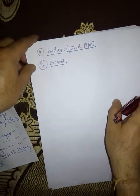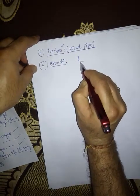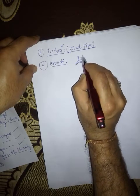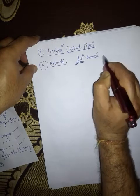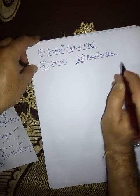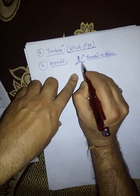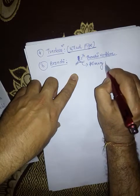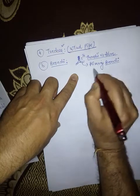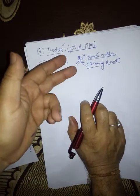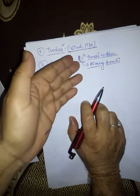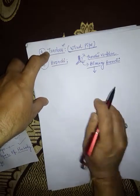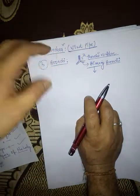The lower part of the trachea is divided into two parts at the fifth thoracic vertebra. At the fifth thoracic vertebra, the trachea is divided into two branches. These branches are called primary bronchi. The left side primary bronchi enter the left lung and the right side primary bronchi enter the right lung.